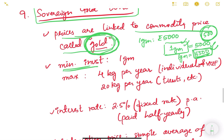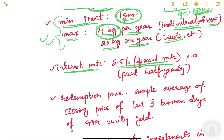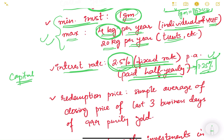The minimum investment in Sovereign Gold Bonds is one gram of gold. The maximum that an individual or Hindu Undivided Family can invest per year is 4 kg of gold equivalent. Trusts, universities, charitable trusts, and other institutions can invest up to 20 kg per financial year. Additionally, there is a fixed interest rate of 2.5% per annum paid half-yearly, meaning every six months you receive 1.25% as interest — so apart from possible capital gains from gold price increases, you also earn this interest.